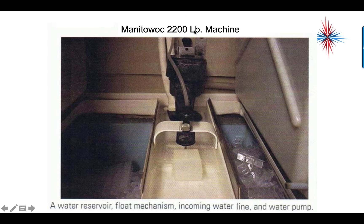If you take a look in here, this is a 2,200-pound-per-day machine with a water reservoir or float mechanism, incoming water line, and water pump. Here's the float mechanism, incoming water line comes into the float. You have your pump, the outlet of the pump, and the reservoir down here in the center.